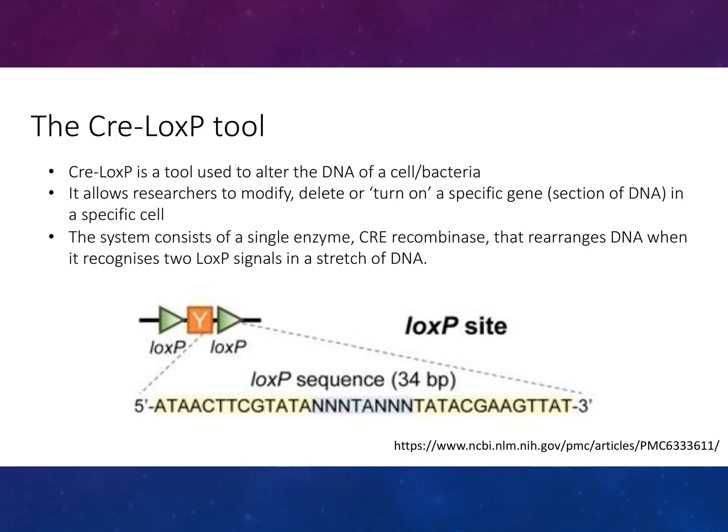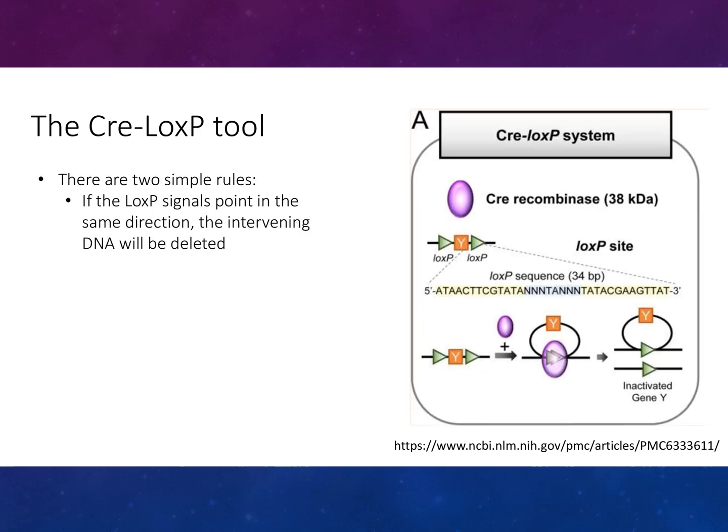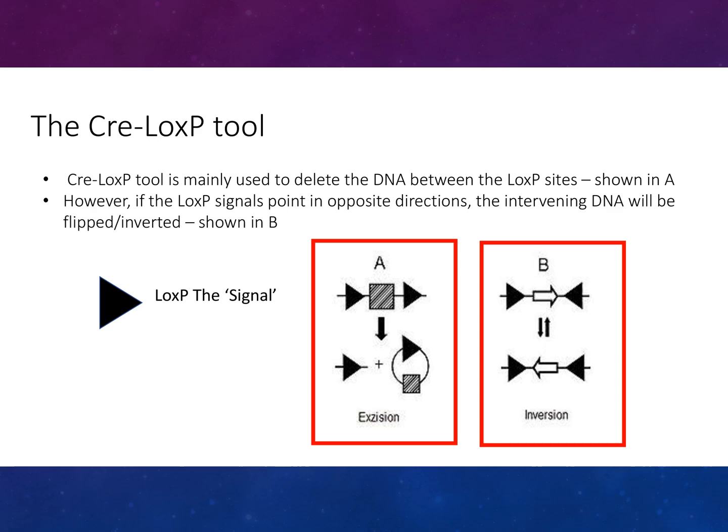Now looking at the Cre-loxP tool. This is a tool used to alter DNA in cells or bacteria. It allows researchers to modify, delete, or turn on a specific gene and detect specific DNA in a cell. The system consists of a single enzyme, Cre recombinase, which recombines and rearranges DNA when it recognises two loxP signals flanking DNA. There are two simple rules: if the loxP signals point in the same direction, the intervening DNA will be deleted — this is the main use of Cre-loxP, shown in A. However, if the loxP signals point in opposite directions, the intervening DNA will be flipped and inverted, as shown in B.